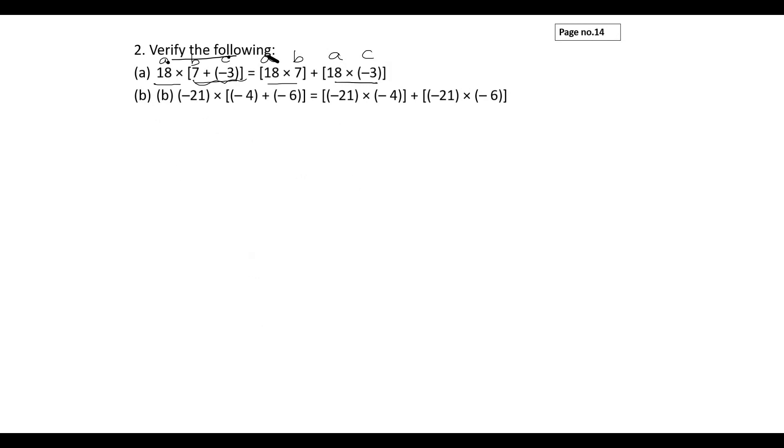Next, subdivision (b): a is -21, b is -4, and c is -6. This is also distributive property, so you can perform the operations. First take -21 × (-4 + (-6)). -4 plus (-6) will be -10, so -21 × (-10) will be plus 210.